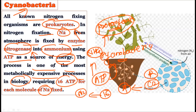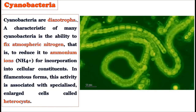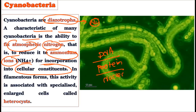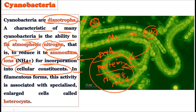A characteristic of many cyanobacteria is the ability to fix atmospheric nitrogen — to reduce it to ammonium ions for incorporation into cellular constituents such as DNA and proteins. Nitrogen can be fixed to ammonium ions, which are then incorporated into these cellular constituents. In the filamentous form, these activities are associated with specialized cells called heterocysts.